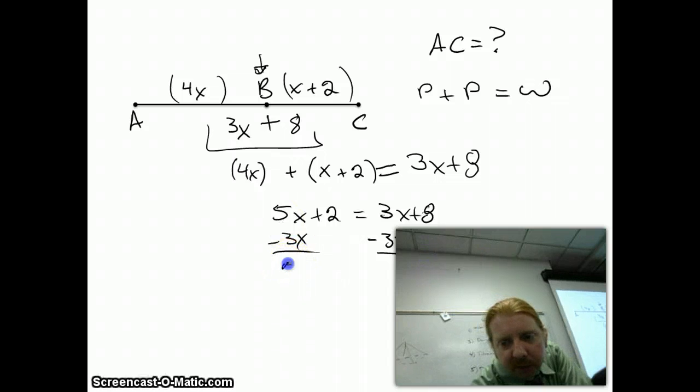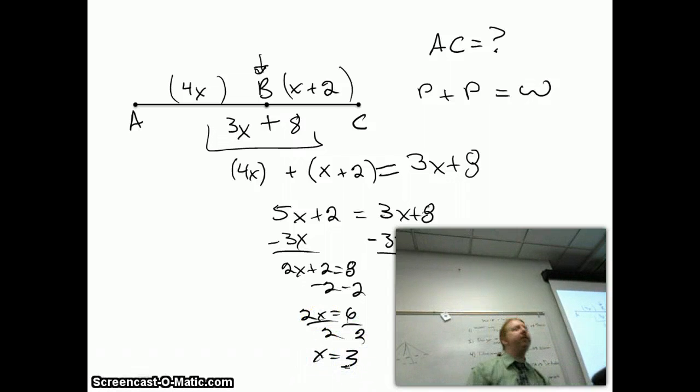Subtract 3x from both sides leaves me 2x plus 2 is 8. Subtract off the 2. That's going to leave me 2x is equal to 6. Divide off the 2. X is equal to 3. Am I finished? No. Are you sure? Yes. Okay.